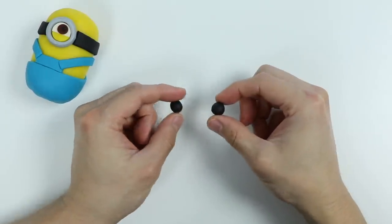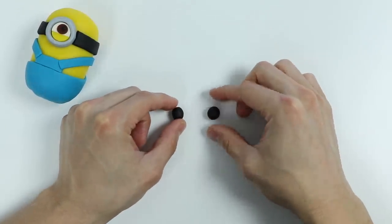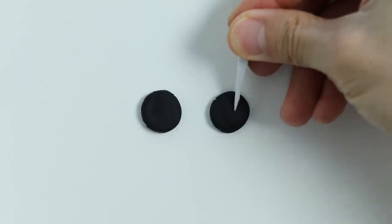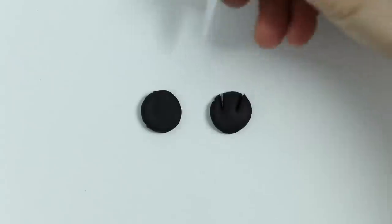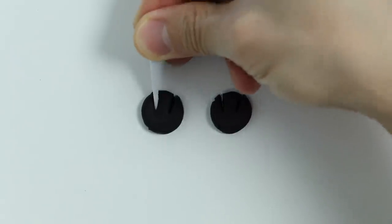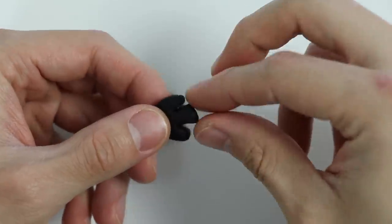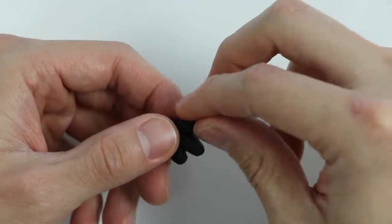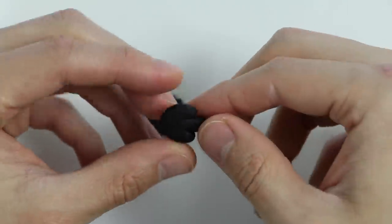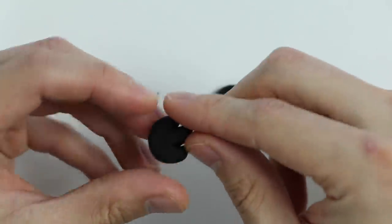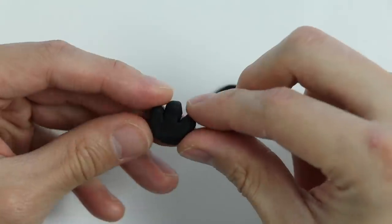Now let's make his hands. Use some black Play-Doh. Now let's use this tool to make his fingers. Shape it a bit. Do the same for the other hand. There we go!